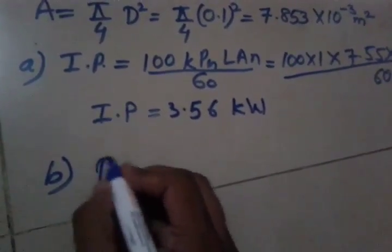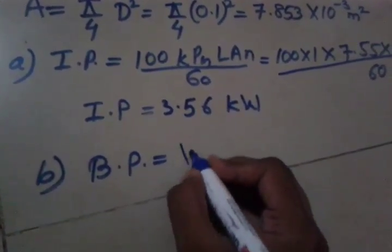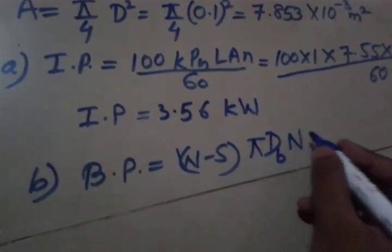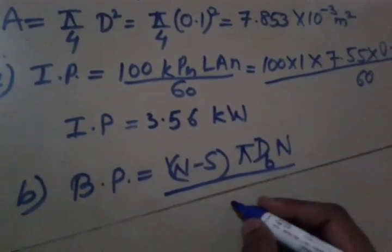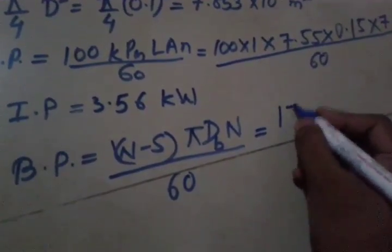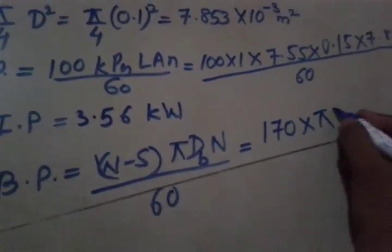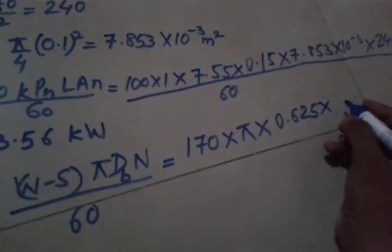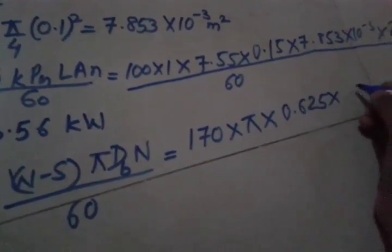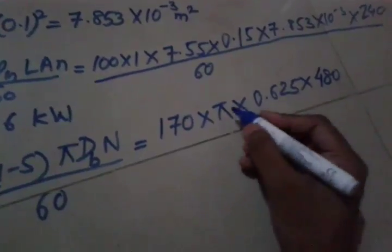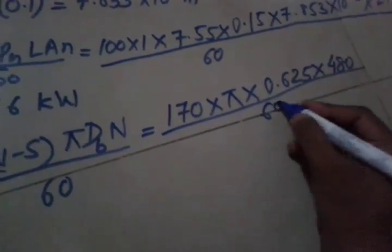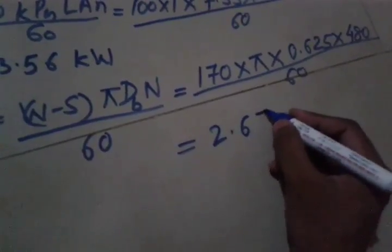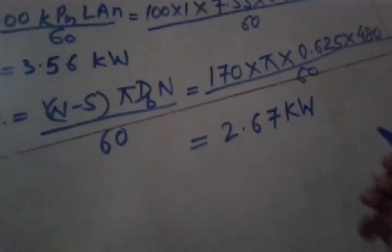Second is brake power. For brake power, the formula is W minus S into pi DB into N divided by 60. So net load we have been given as 170 into pi and DB we calculated as 0.625 and capital N we got it as 480 and then divided by 60. So we got brake power as 2.67 KW.